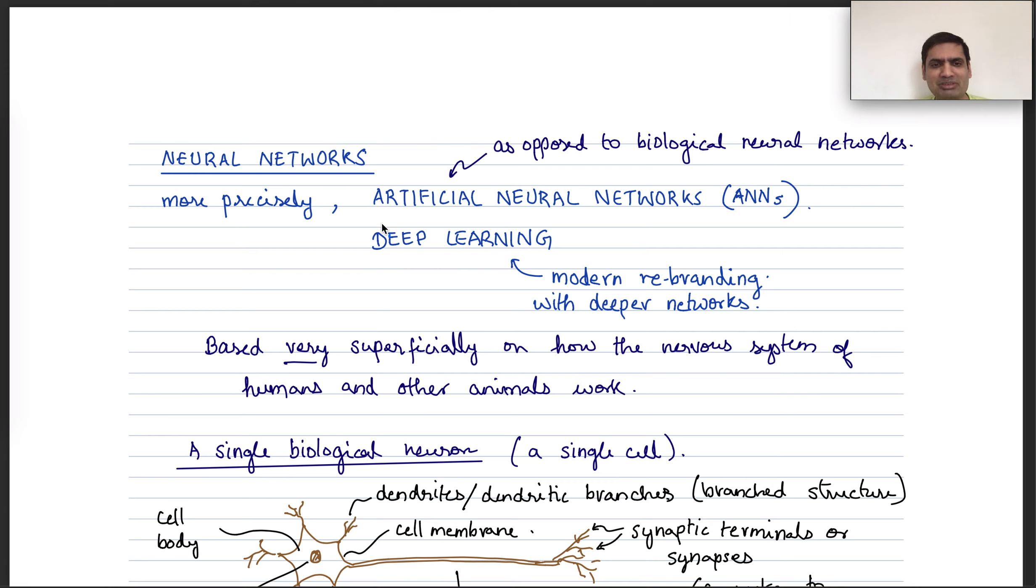And sometimes, especially these days, it's conventional or fashionable to call such techniques deep learning, which is actually a modern rebranding of the classical field of neural networks, which goes back about 70 years now, with more computation and more complex networks.